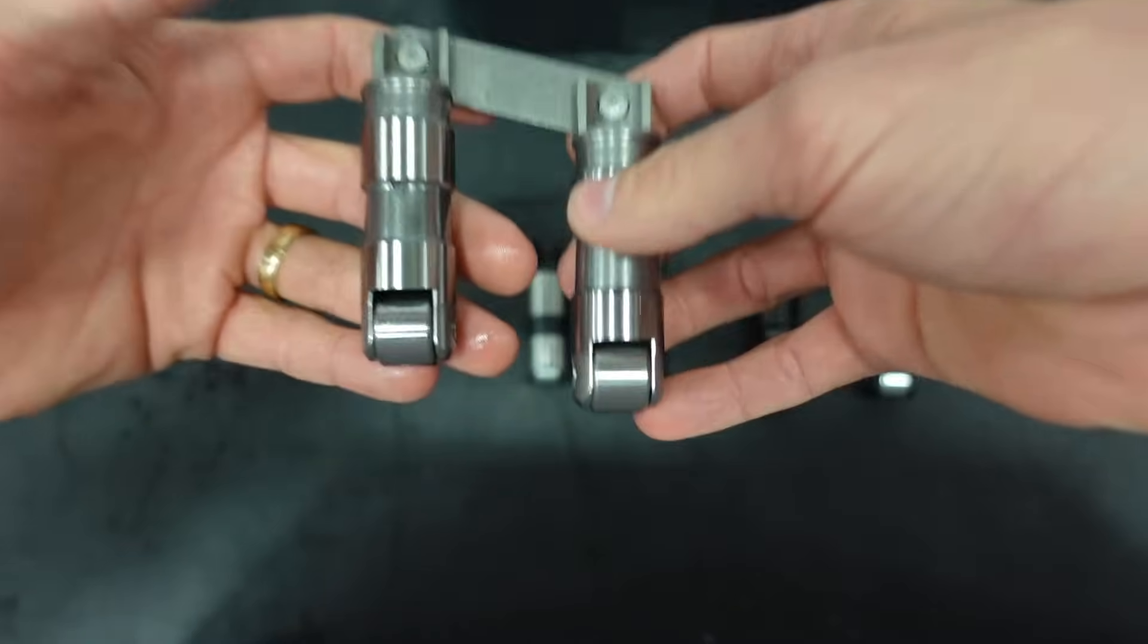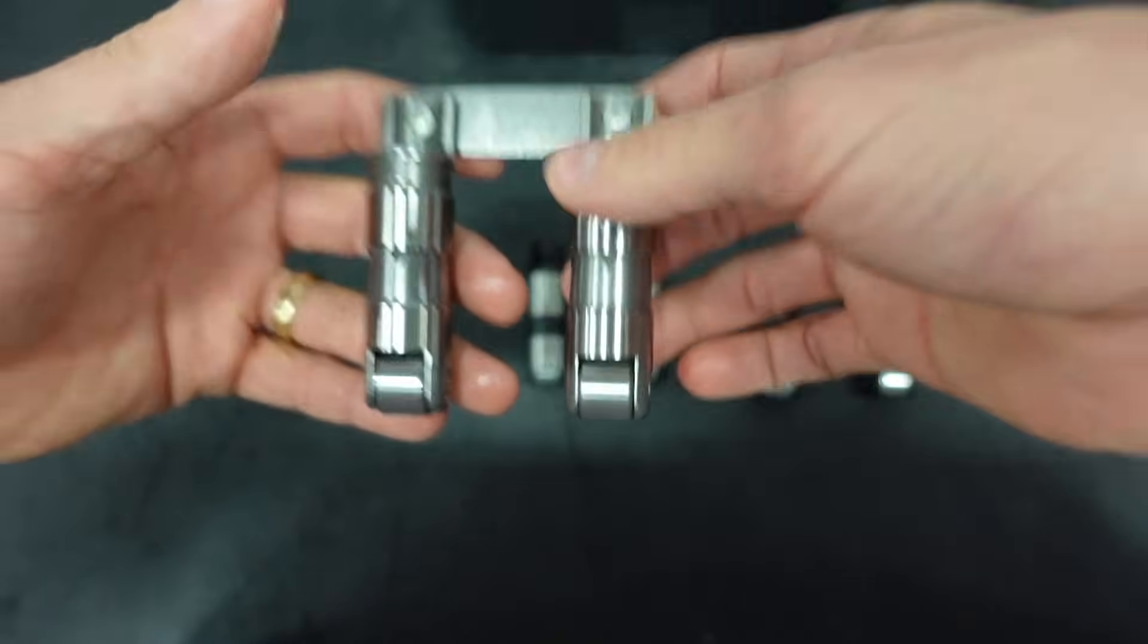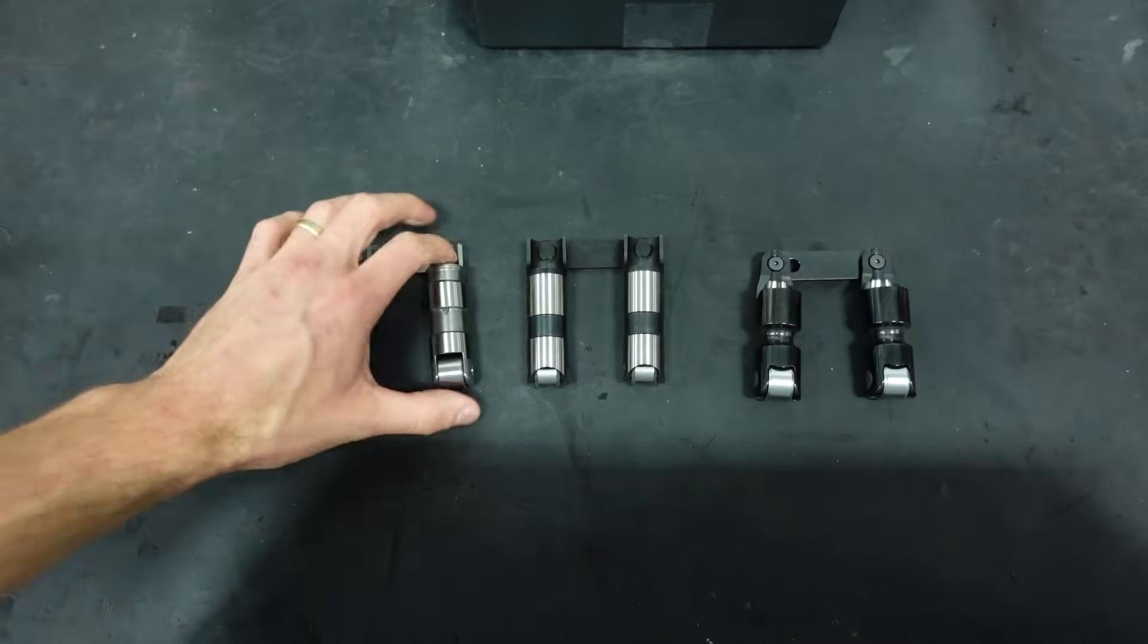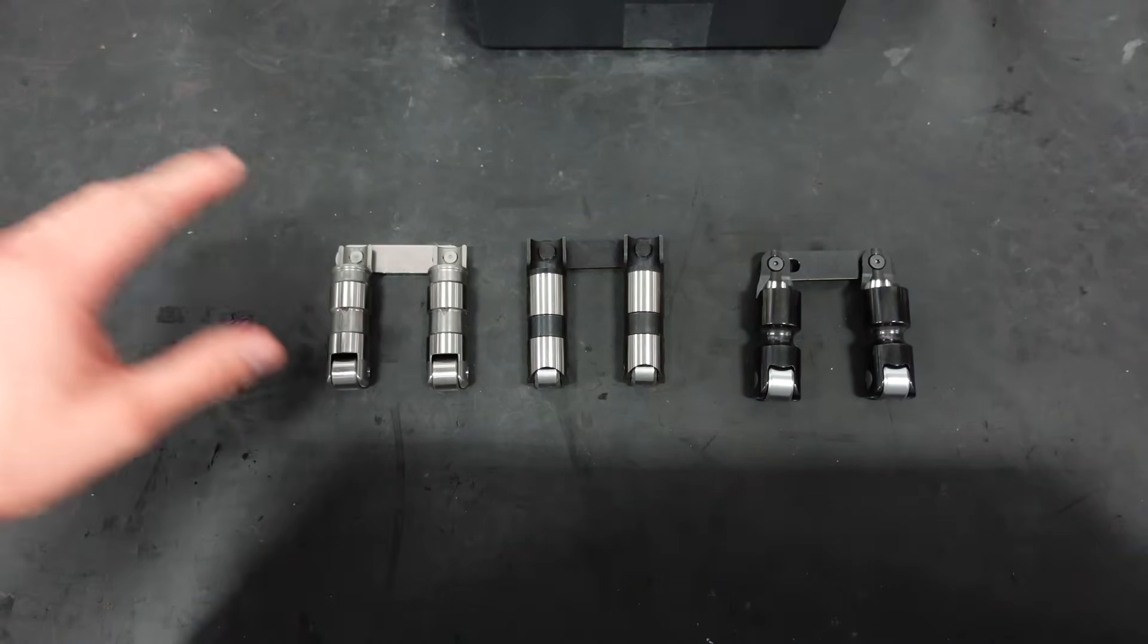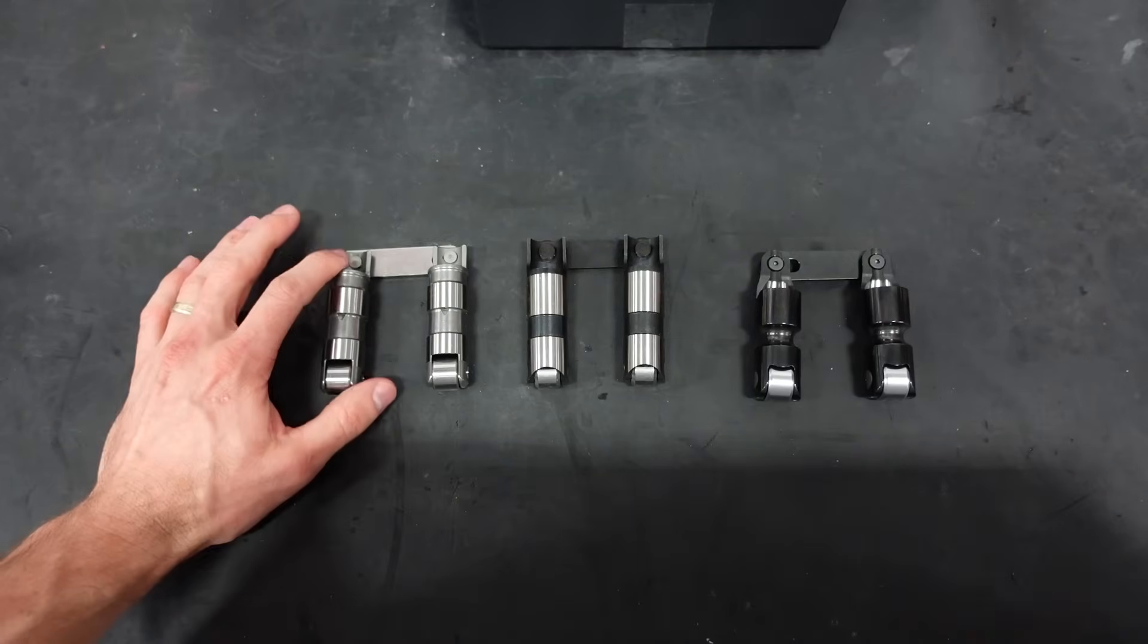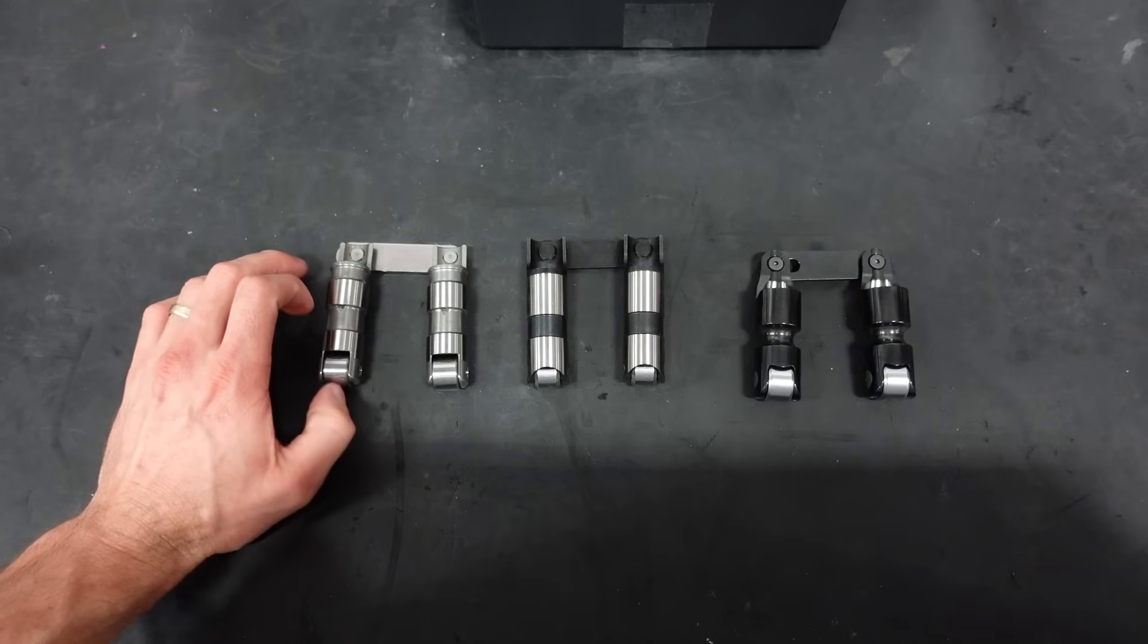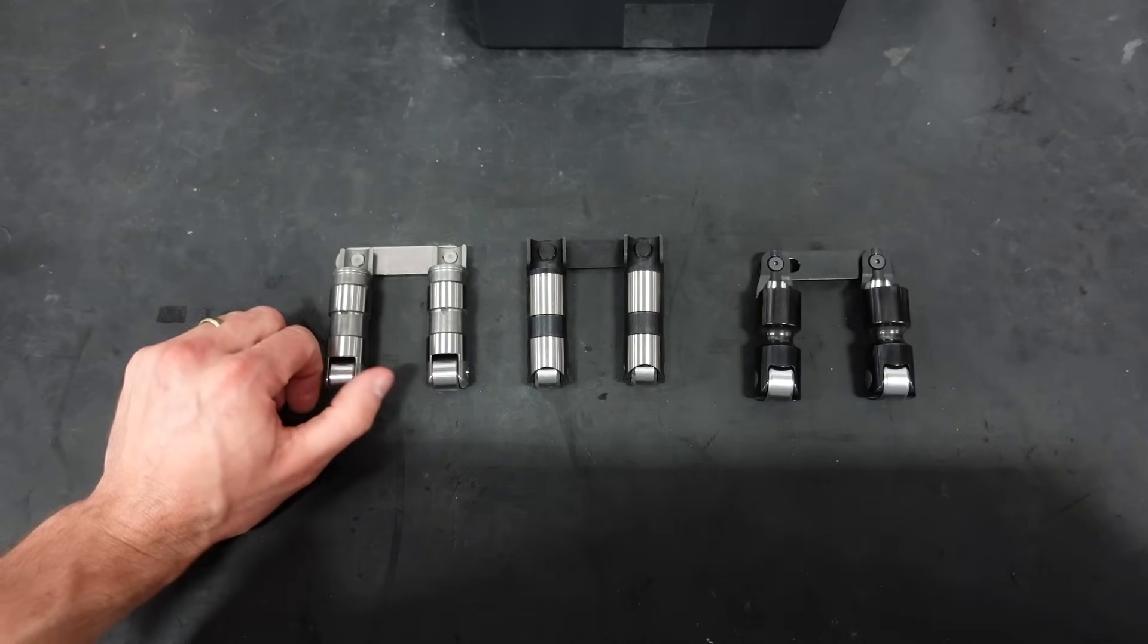These lifters are great for your street strip combo, has a nice cam, has a set of, I don't know, BTR 660 dual springs, you know, all standard stuff. Nothing super radical, but definitely performance oriented. And these are great. We have run these in big block Chevys for a very long time. We've had great luck with them in low 7,000 RPM LS combos with about 400 to 420 open spring pressure. And I love them.